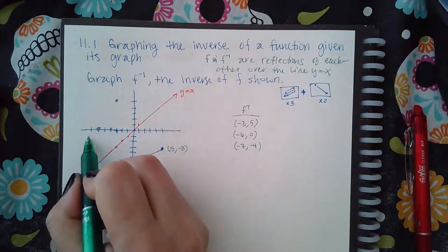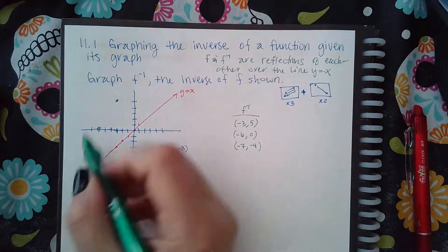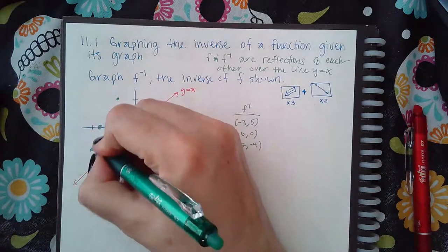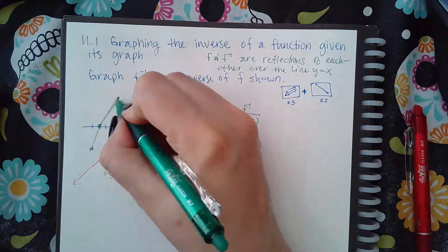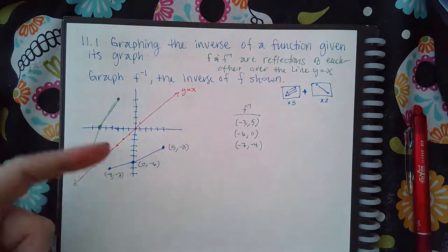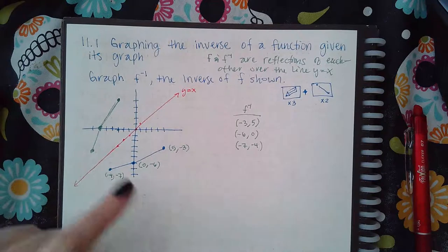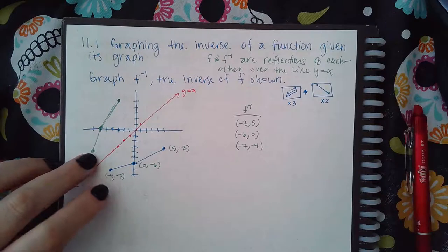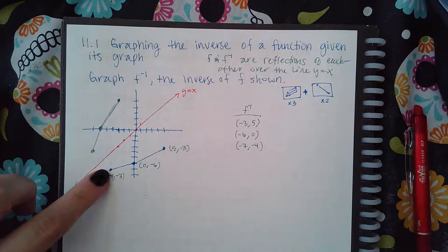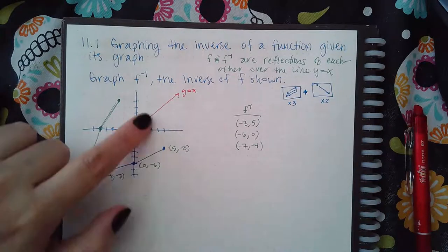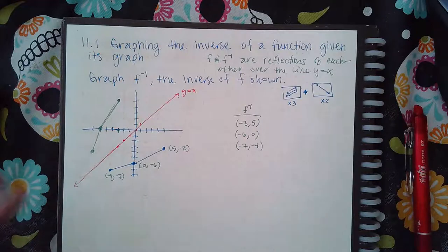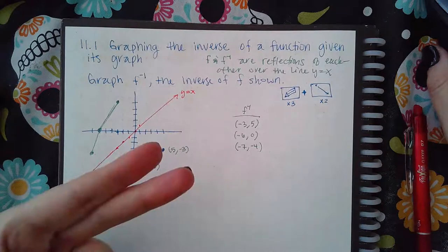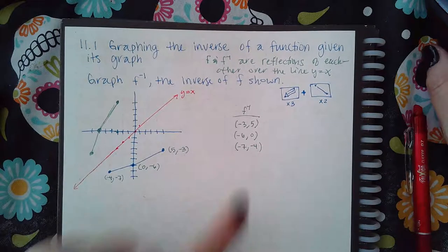Then negative 7 and negative 4. The original function has a straight line here and a straight line there, so I'm going to do the same thing — make a straight line here and a straight line there. You'll notice that these are literally mirror images of each other over the line y equals x. This is not graph paper, so the distances may look slightly off, but the distances should be equal.